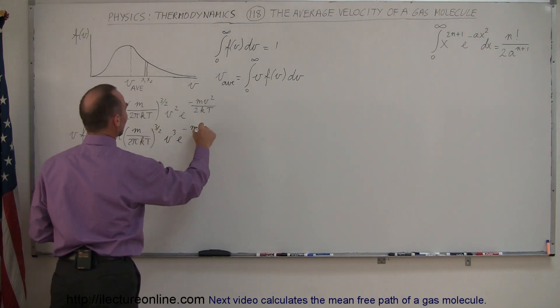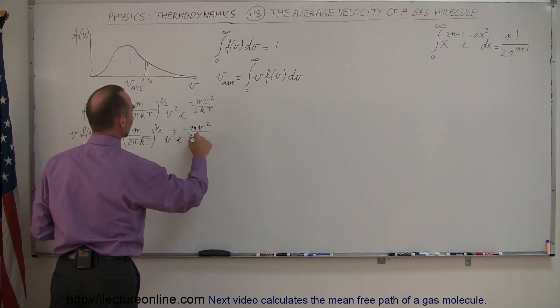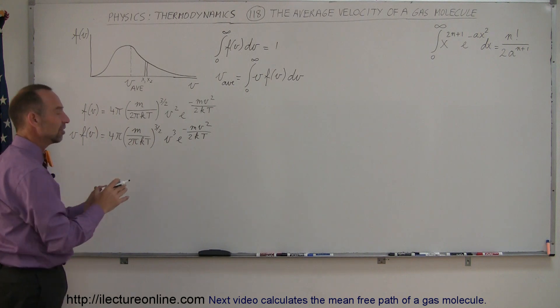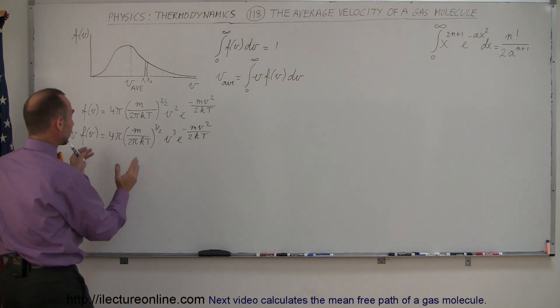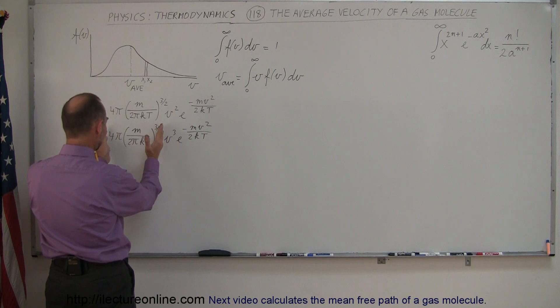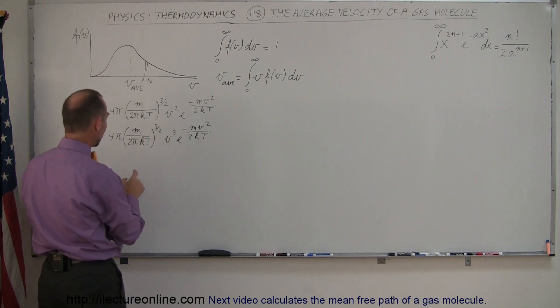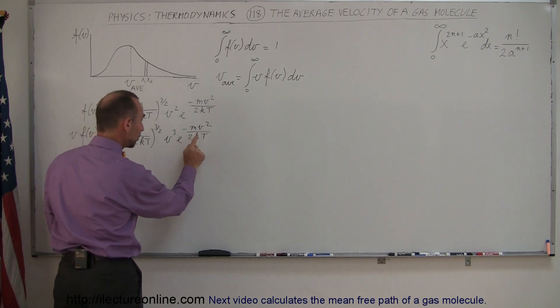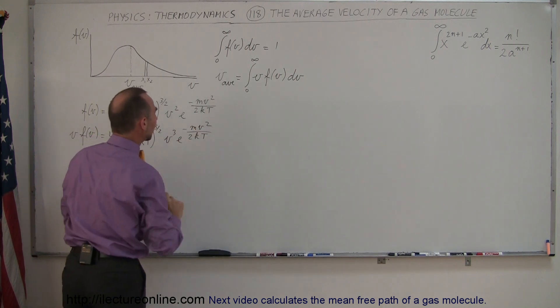Now again, like we did in the previous video, to make this really messy equation into something that looks a lot easier, I'm going to take this whole piece right here and call it a constant 1, because nothing in here varies if we keep the temperature the same. And in the exponent here, the M, the 2K and T are all constants, I'm going to call that constant 2.